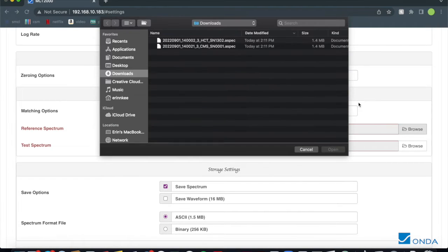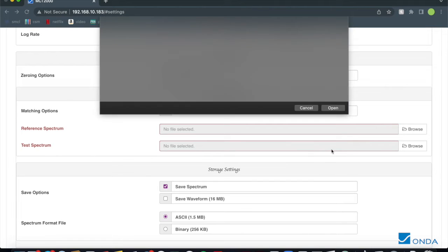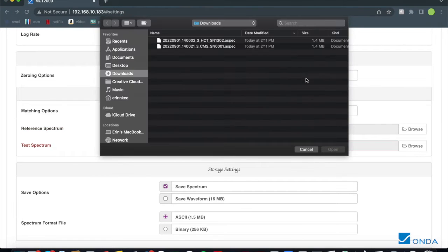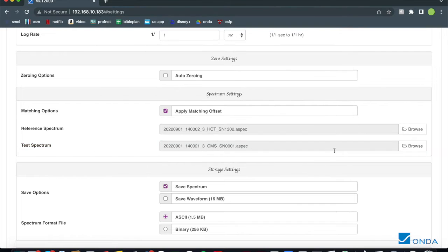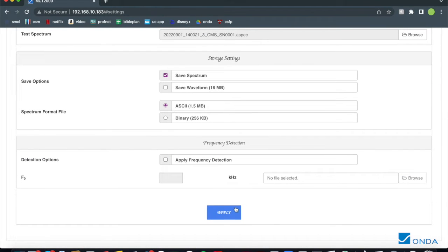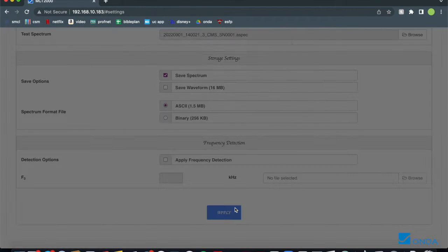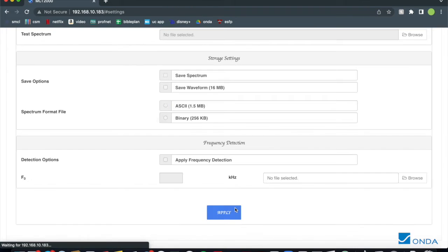The HCT320 should be the reference and the CMS should be the test. After matching offset is applied, press Apply. The CMS should now spectrally match with the HCT320.